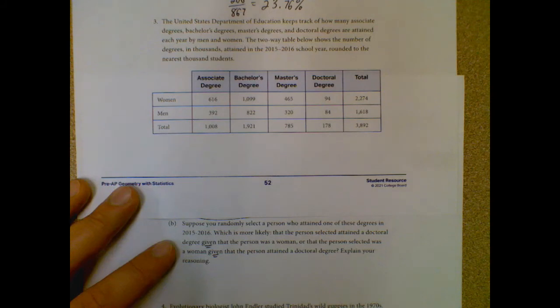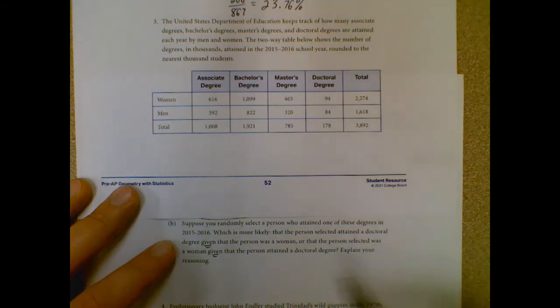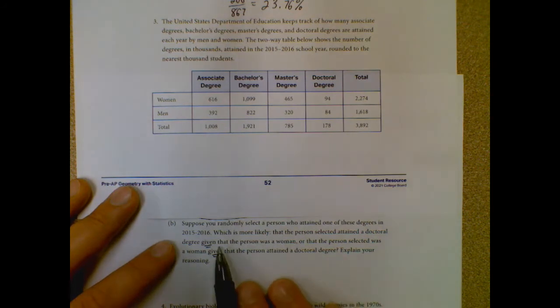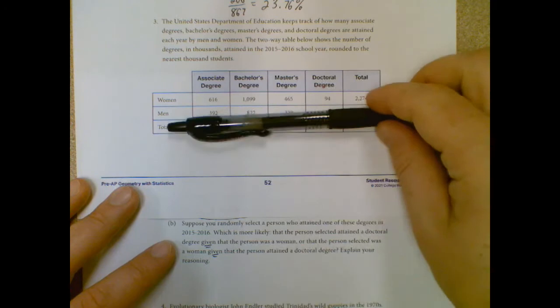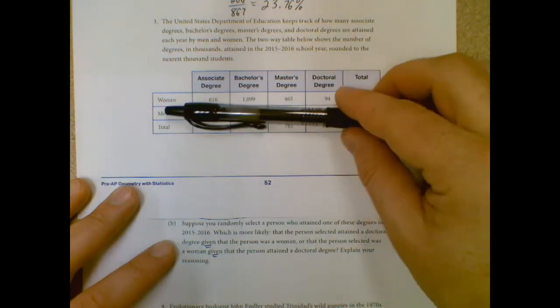So these ones will probably want to actually work out and see how it sets up. And the part that makes it different is what's given. So this one, given the person was a woman, I'm only going to look at the women's row here.